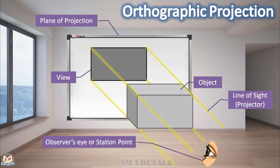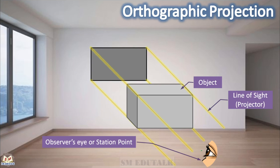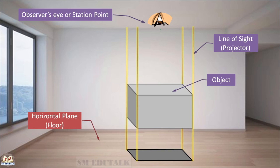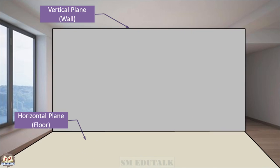Here, a whiteboard acts as the plane of projection. But any flat surface can act as a plane of projection — when the whiteboard is removed, the image is directly projected onto the wall. The wall stands vertical, hence it is called the vertical plane. The view obtained in the vertical plane when the object is viewed from the front is called the front view. When the object is viewed from the top, projectors trace the object and the image is projected onto the floor. The floor is horizontal, hence it is named the horizontal plane, and the corresponding view is called the top view.